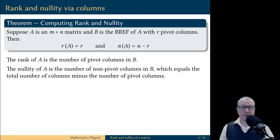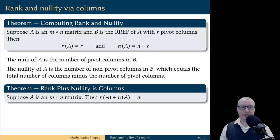But the number of non-pivot columns is the total number of columns, which is N minus the number of pivot columns, which is R. In particular, let's observe that the rank and nullity of a matrix always add up to the number of columns of the matrix. This is a trivial consequence of the above result.